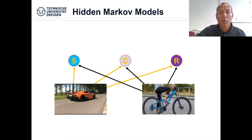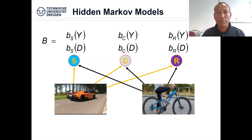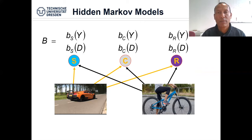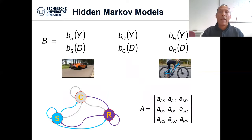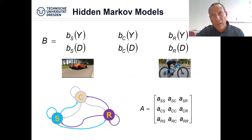Whether she drives or cycles depends on the weather, but she may nonetheless drive in each of these states with different probabilities. Likewise, she may cycle even when it is rainy, cloudy, or sunny — so we have these emission probabilities. For example, the probability of taking the bicycle when it's sunny is higher than cycling when it's raining. Likewise, the probability of driving when it's rainy is higher than when it's sunny.